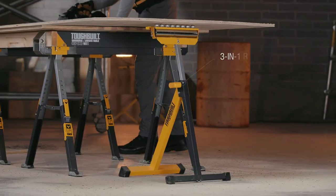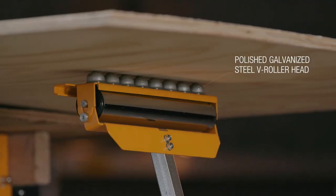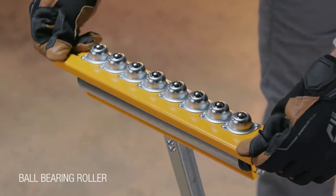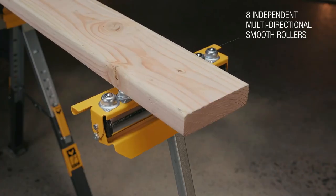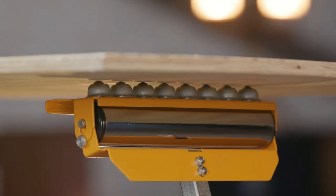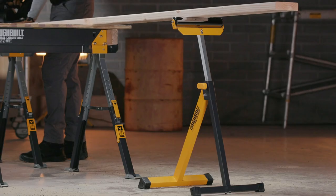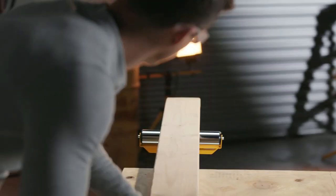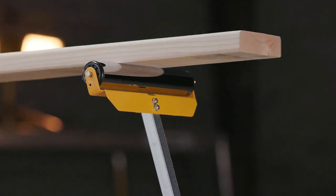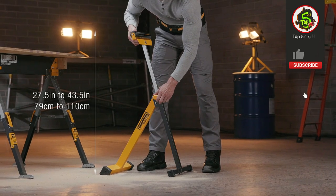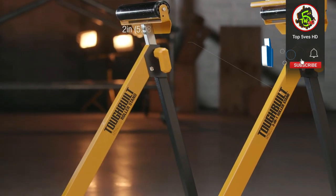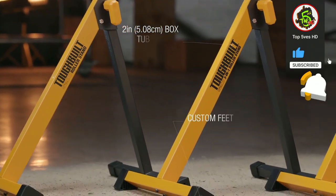This roller stand features a box tube frame for strength and stability, a chrome roller allowing materials to glide smoothly on top, legs that fold flat for compact storage, and a height adjustment lever that easily locks and unlocks so the height can be positioned anywhere from 27.5 inches to 43.5 inches at full extension.